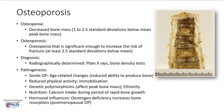Osteoporosis can be due to many different causes. One of the commonest is senile osteoporosis, which is age-related, where there is a reduced ability to produce new bone with age. Reduced physical activity and immobilization can also contribute to this; hence it is always important for the elderly in particular to stay active. Genetic polymorphisms can also give rise to the actual peak bone mass achieved in life and therefore increase susceptibility to osteoporosis.